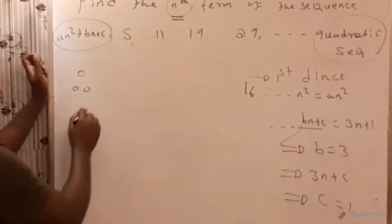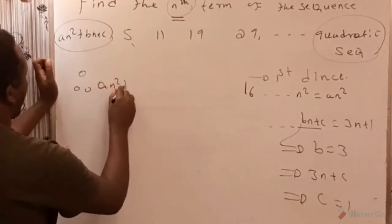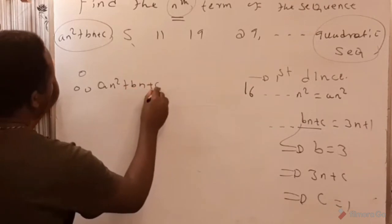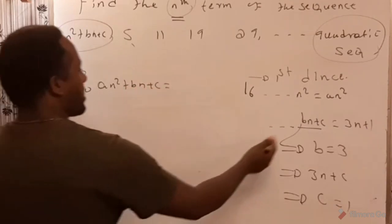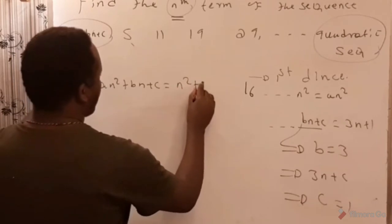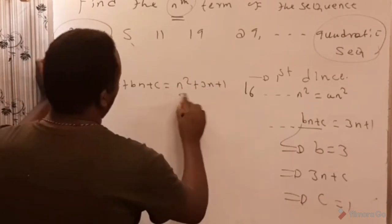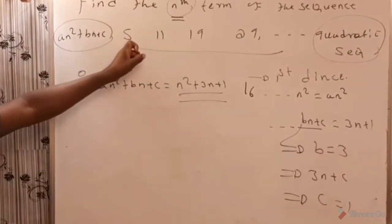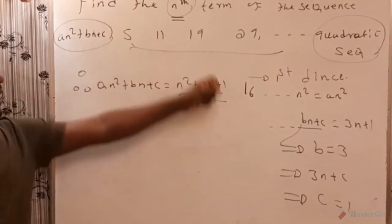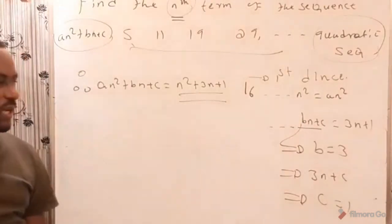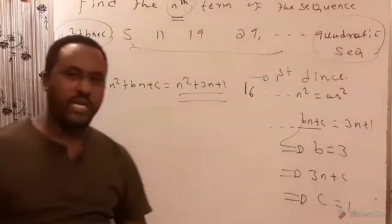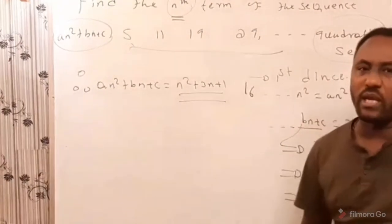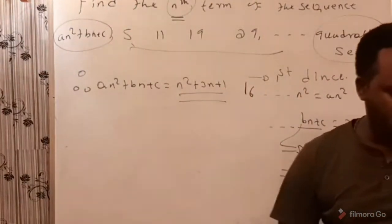Finally, the general term for the sequence is an² + bn + c, which is n² + 3n + 1. Therefore, the nth term for the sequence 5, 11, 19, 29, ... is n² + 3n + 1. This is a simple technique for determining the general term of a quadratic sequence. Thank you.